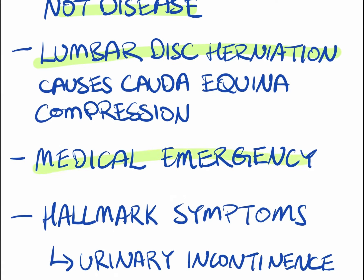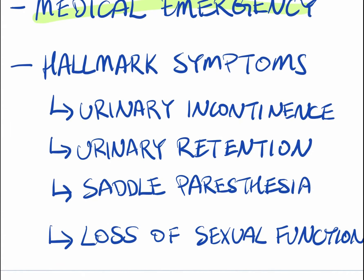Cauda equina syndrome is a medical emergency and needs to be treated as soon as possible, because there could be serious issues later on. The hallmark symptoms that tell a practitioner this is cauda equina syndrome include bowel and bladder issues — that's probably the dead giveaway. Urinary incontinence means you're not able to control your bladder; it leaks and you either don't know about it or can't control it. Urinary retention is the opposite — you can't fully empty your bladder and always feel like something is left.